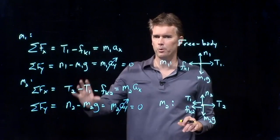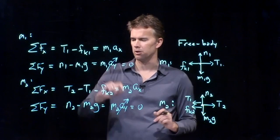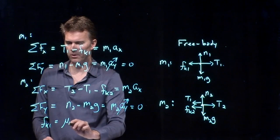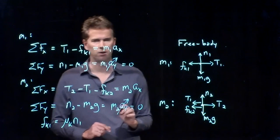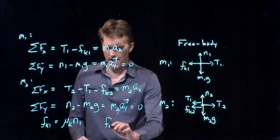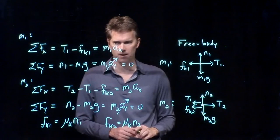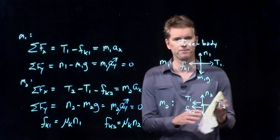We have four equations now, but we need a couple more, which are the friction equations. Friction is equal to the coefficient of friction times the normal force. So FK1 would be mu K N1, FK2 is mu K N2. And now let's see if we can put all this stuff together and solve for the tension T1.